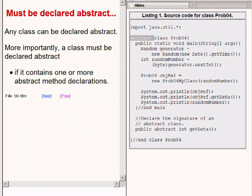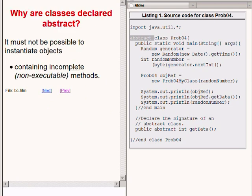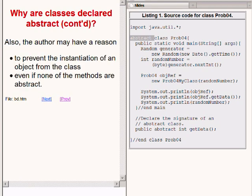A class must be declared abstract if it contains or even if it inherits one or more abstract method declarations. You might wonder why classes are declared abstract. The reason is that it must not be possible to instantiate objects containing incomplete methods that cannot be executed. Another reason is that the author of the class may have a reason to prevent the instantiation of an object from the class, even if none of the methods in the class are abstract.